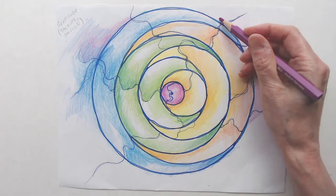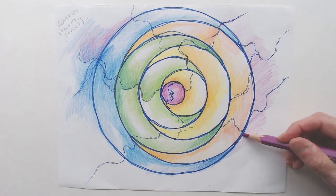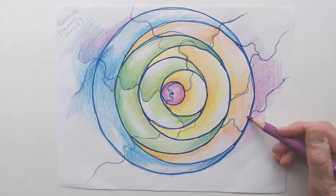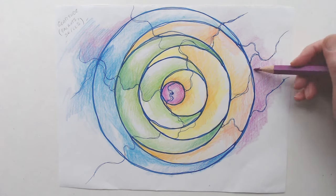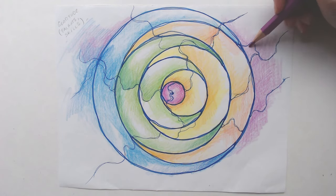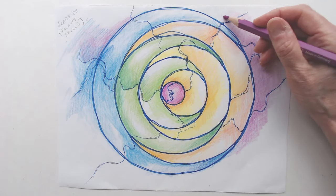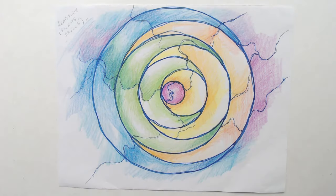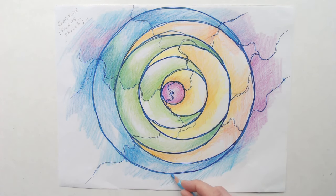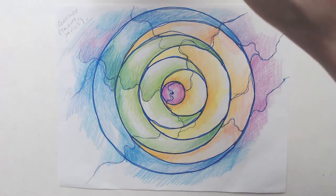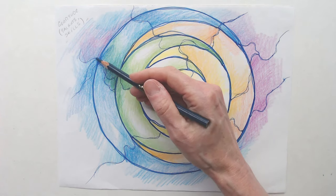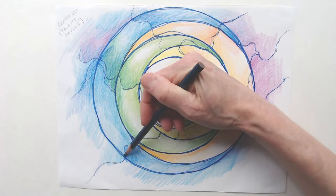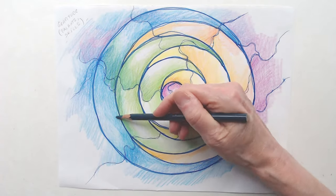As you bring your drawing to life with these colors, say these affirmations: The vibrant energy of yellow fills me with joy and clarity. Orange sparks my creativity and fuels my passions. Green nurtures my growth and brings balance to my life. Blue surrounds me with peace and wisdom. Purple awakens my intuition and connects me to my higher self. Each color I choose enhances my intention and enriches my journey. I trust the power of color to uplift and transform my energy. My artwork radiates harmony and reflects my inner light.